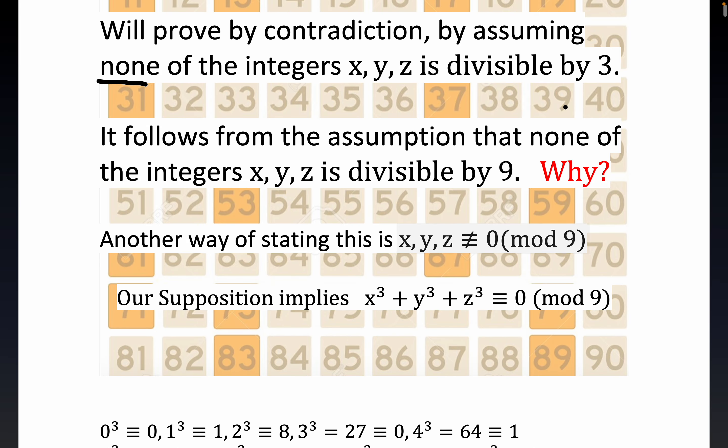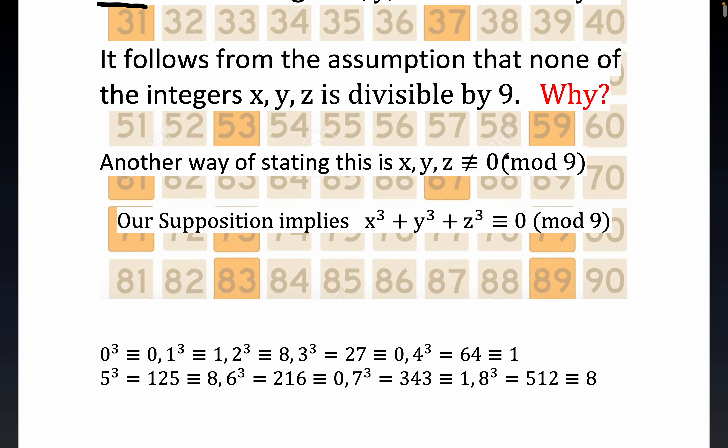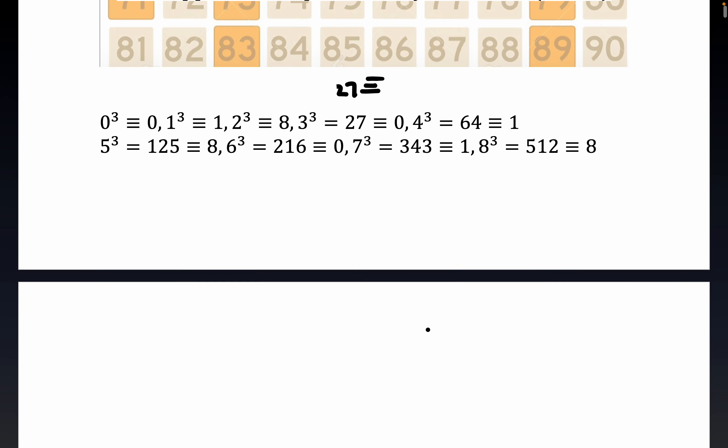All right, so what's left now is to do some calculations. What I do is 0 cubed, 1 cubed, 2 cubed. Now notice you get to 3 cubed, 27 is congruent to 0, right? Because 27 is a multiple, and we're talking modulo 9 here folks. Let me write this down. I should be writing this. This is modulo 9.